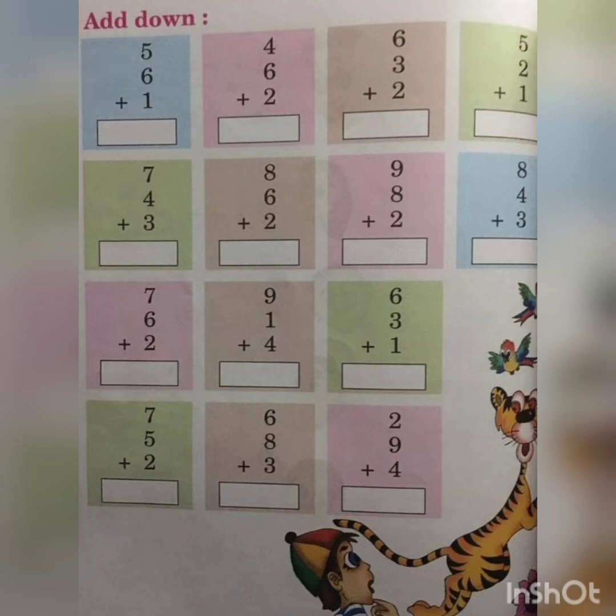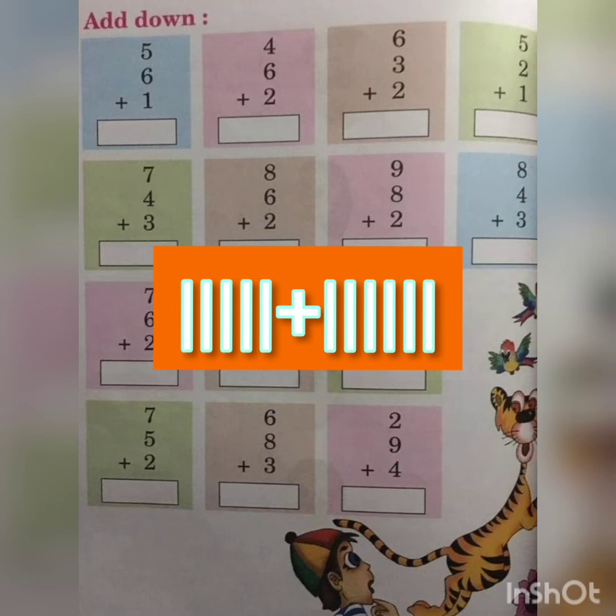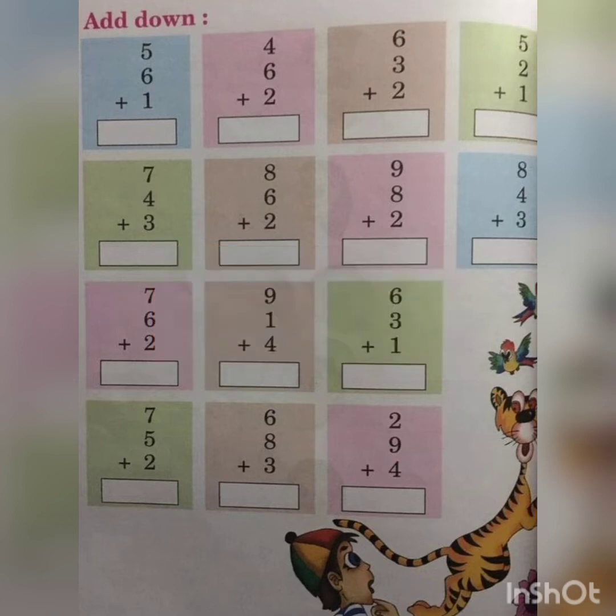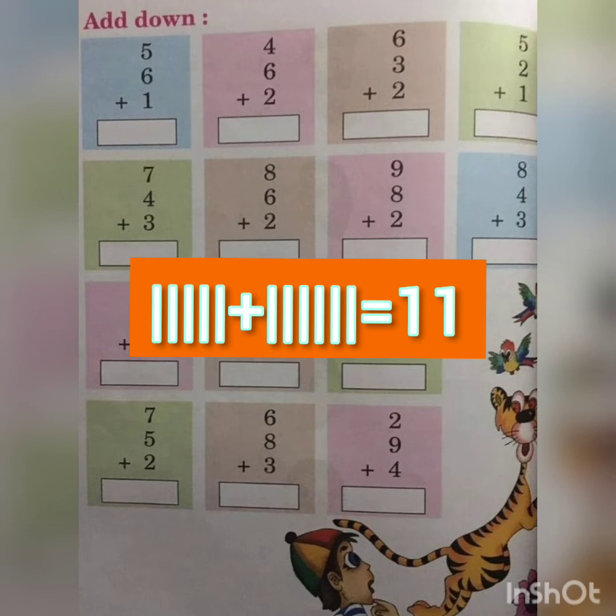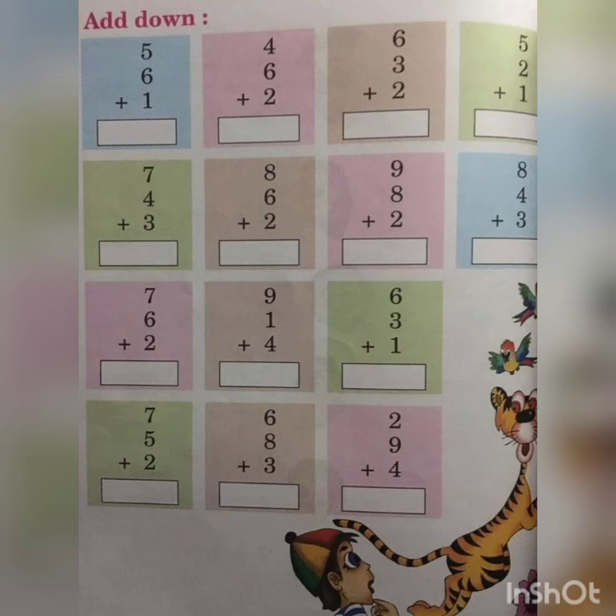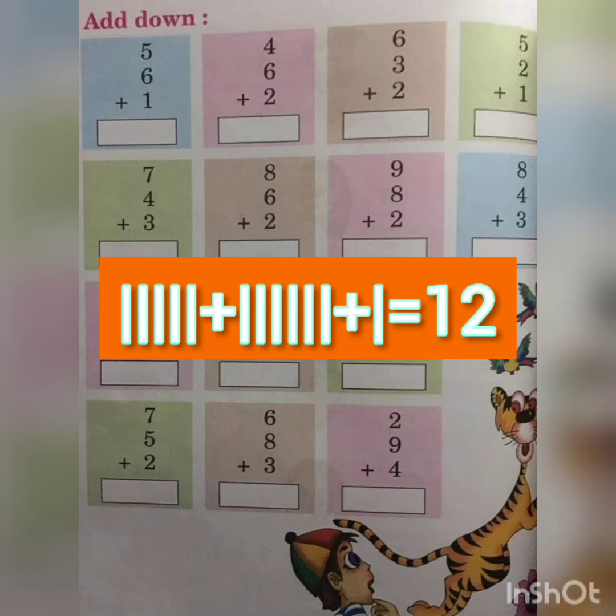The simplest way to add the three numbers is by adding the first two numbers: five and six. You can draw lines in your notebooks. First, you can draw five lines and another six lines. So if you add both, you get the number 11. Now, after you get the number 11 by adding 5 and 6, you can draw one more line. So that means the total sum of 5, 6 and 1 will be 12.